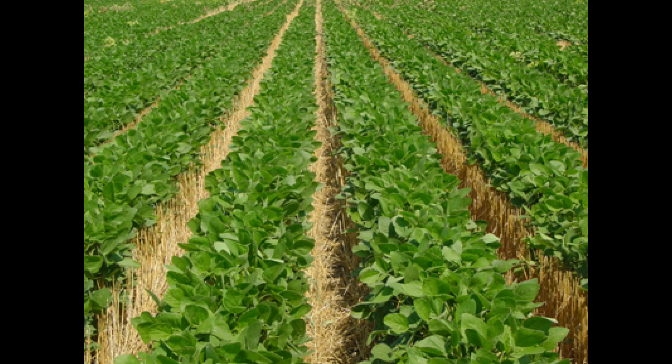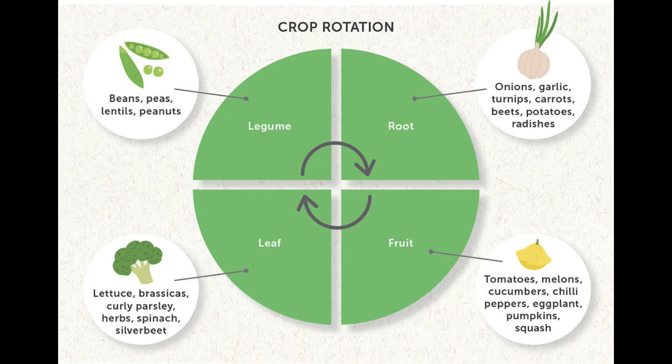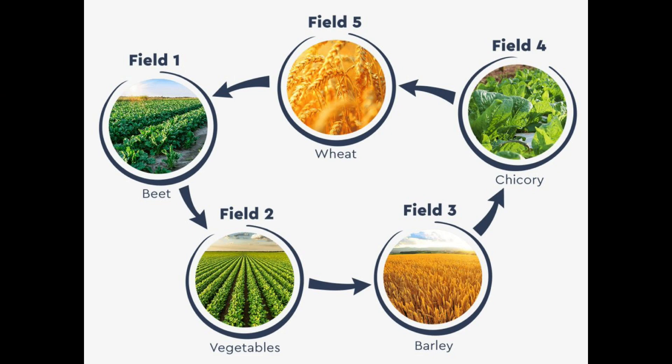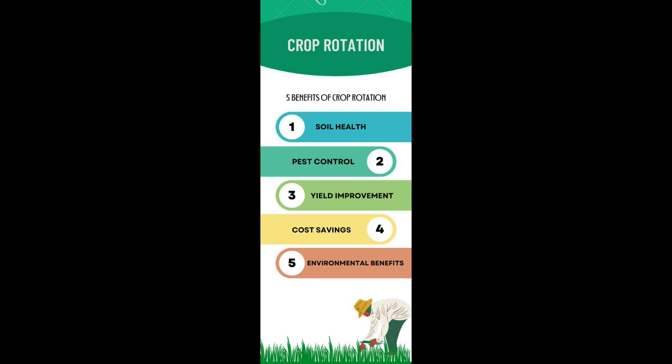Crop rotation is a practice of growing a series of different types of crops in the same area across a sequence of growing seasons. This practice reduces the reliance of crops on one set of nutrients, pest and weed pressure, along with the probability of developing resistant pests and weeds.